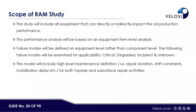The scope of the RAM study included all equipment that can directly or indirectly impact oil production performance. Performance analysis is based on equipment item level; failure modes are defined at equipment level rather than component level. Four failure modes are used: critical failure — 100 percent capacity loss during failure and repair; degraded — 30 percent capacity loss during failure; incipient — lower level than degraded; and unknown. If degraded is not attended, it can become critical. An opportunistic maintenance strategy is used for degraded, incipient, and unknown failures — during a critical repair, these are also repaired simultaneously to save time and cost.